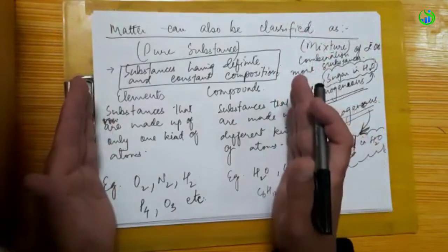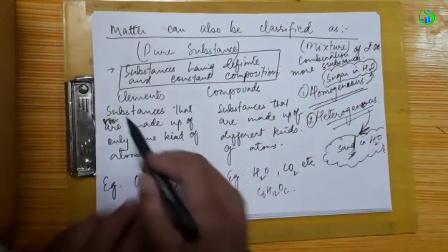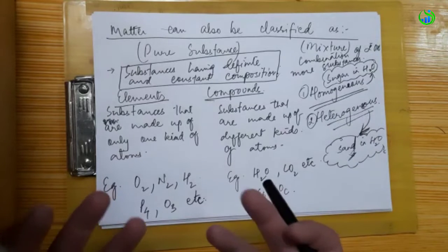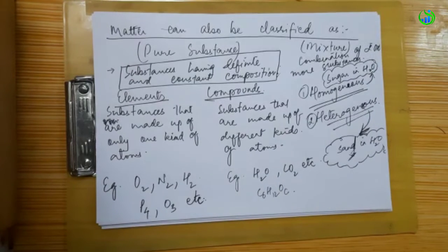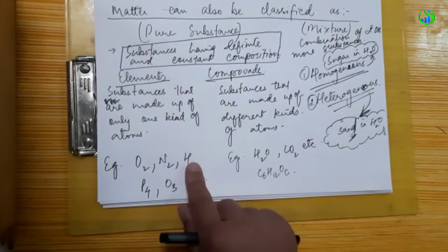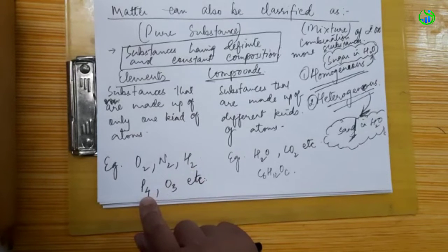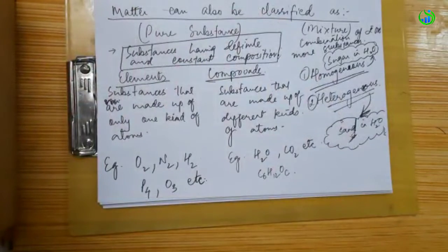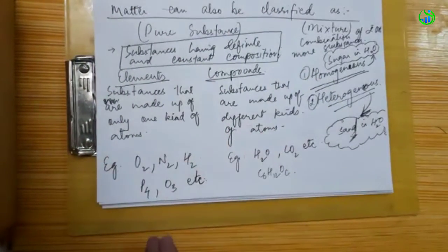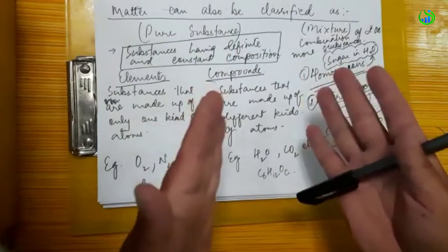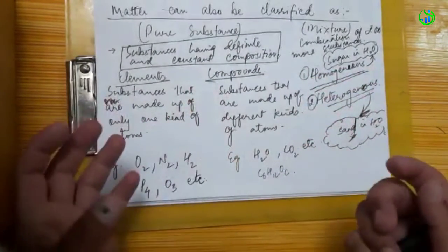Pure substances are further of two types: elements and compounds. Elements are pure substances which are made up of only one kind of atom — for example, oxygen, nitrogen, hydrogen, and phosphorus. Compounds are substances that are made up of different kinds of atoms, but their composition is the same and constant.